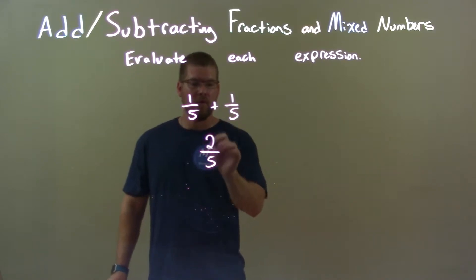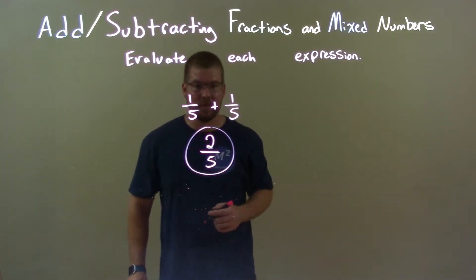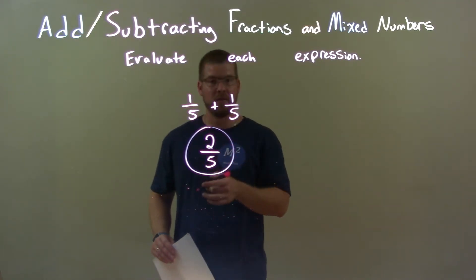So 1 plus 1 is 2, 5 stays in our base. So our final answer here, because this can't be simplified, is just 2 over 5, or 2/5.